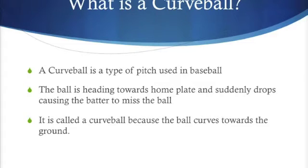What is a curveball? A curveball is a type of pitch used in baseball. The ball is heading towards home plate, then suddenly drops, causing the batter to miss the ball. It is called a curveball because the ball curves towards the ground. There are many variations of the curveball — some that go straight down 12 to 6, like from 12 o'clock to 6, or like a slider, which is more side to side.